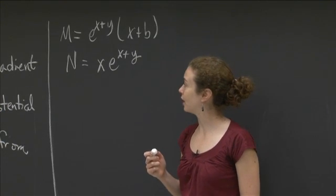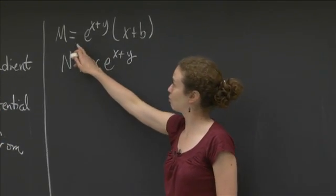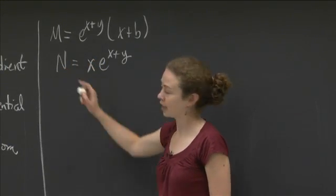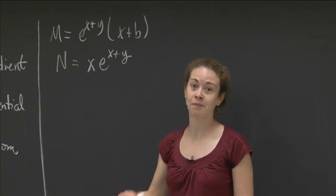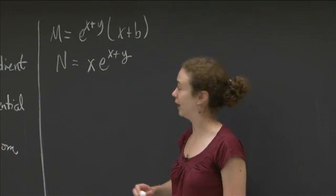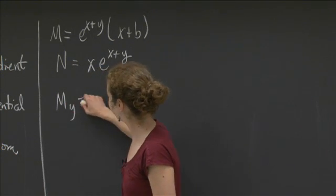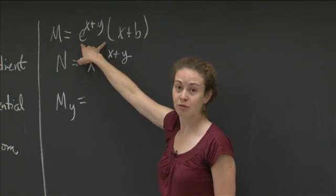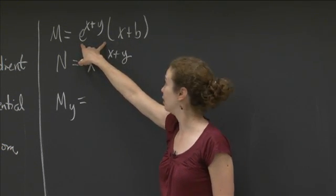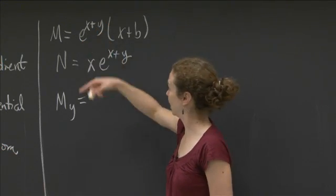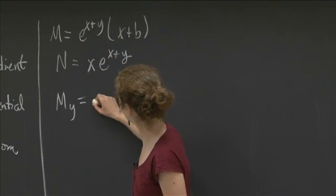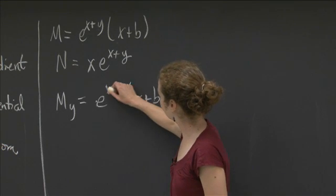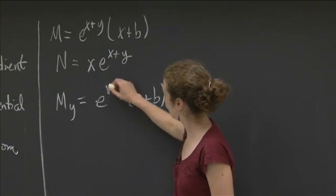And now if I want F to be a gradient field, what I have to do is I have to have m sub y equal n sub x. So I'm going to determine m sub y and I'm going to determine n sub x, and I'm going to compare them and see what value of B I get. So m sub y, fairly straightforward because this is a constant in y. And the derivative of this in terms of y is just this back. It's an exponential function with the value it has in y is linear. So you get exactly that thing back. So it actually is just e to the x plus y times x plus b.